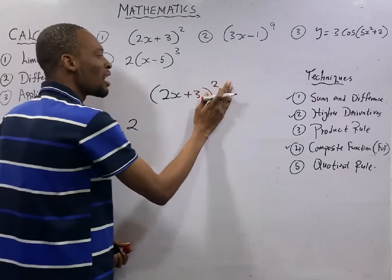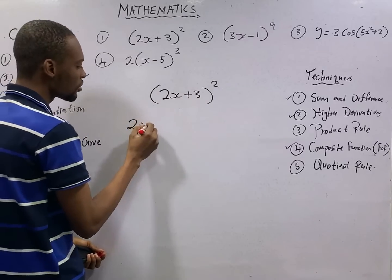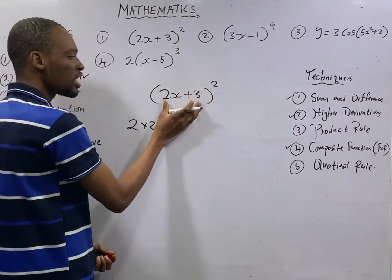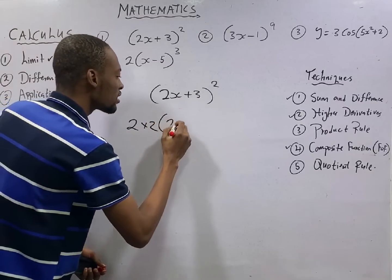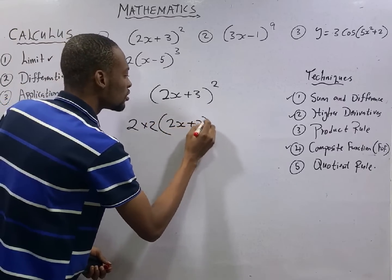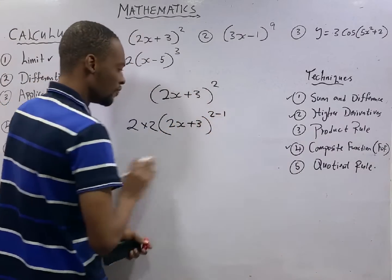Use the power. Use the power to multiply the result of differentiating the bracket. That would be times 2. So these two times the differentiation of the bracket. Then write out the bracket. Then subtract one from the power. That is it.